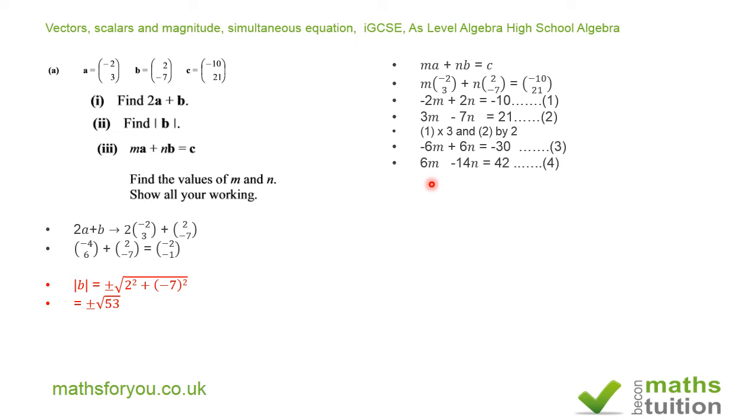For my equation 4, I multiply equation 2 by 2, so I end up with 6M - 14N = 42. That's my equation 4. So if I then add equations 3 and 4, the -6M and the 6M in equation 4 will cancel out. I end up with 6N - 14N, and that will give me -8N = 12.